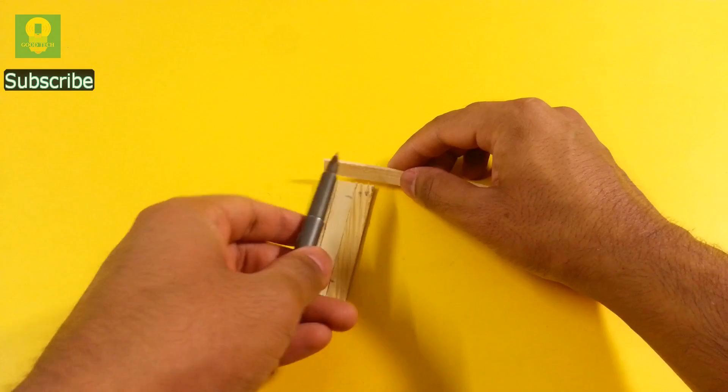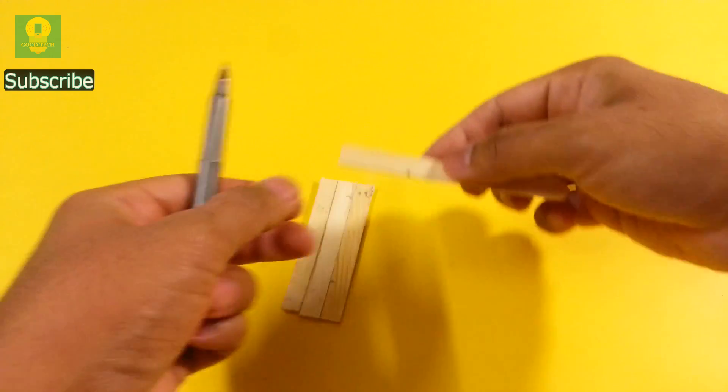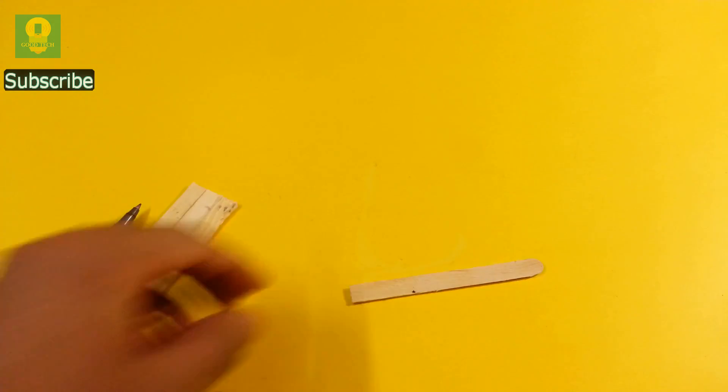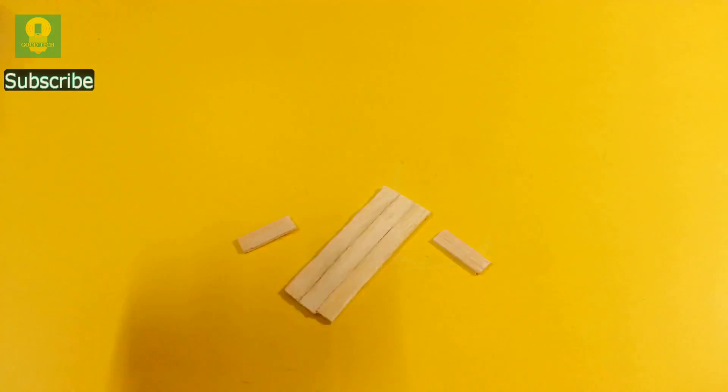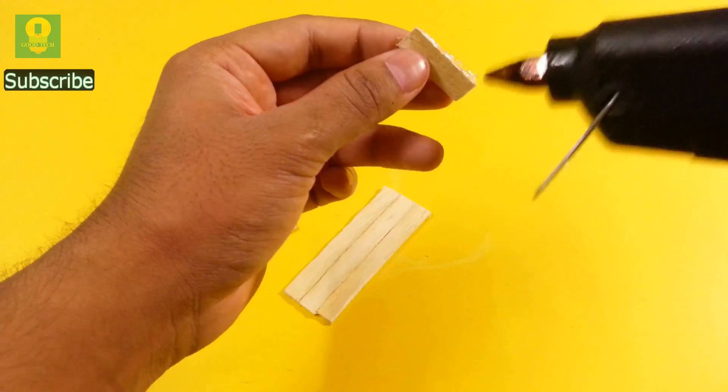Take another stick and mark the width of the base. Cut along the mark and make two such pieces. Using hot glue, paste a piece at one of the edge.